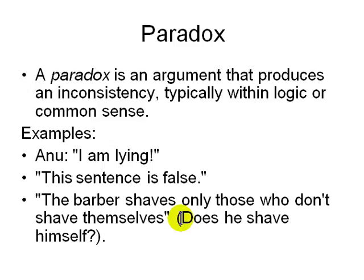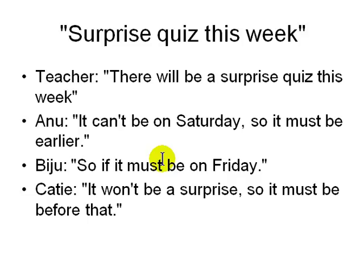The answer to the barber paradox could be surprising. Now let's look at the surprise quiz paradox. The teacher says there will be a surprise quiz this week. Anu reasons it can't be on Saturday, so it must be earlier — not Friday either, and so on. Eventually the quiz must happen immediately to be a surprise; otherwise people will be prepared. So it can't be on the last day, or the second last day — it has to be today. That's a paradox involving time and surprise.